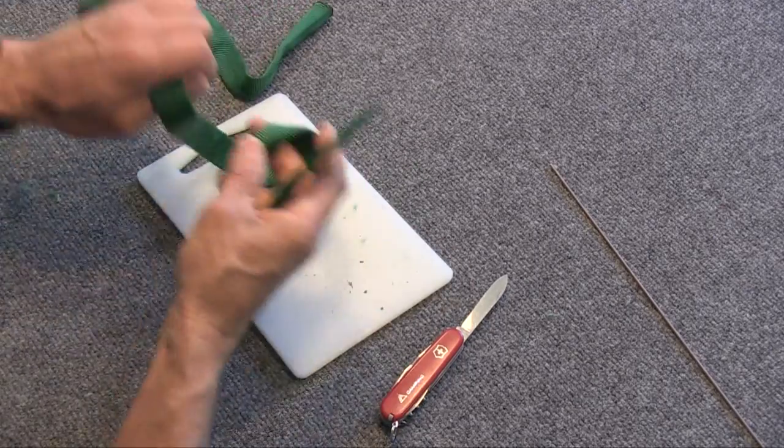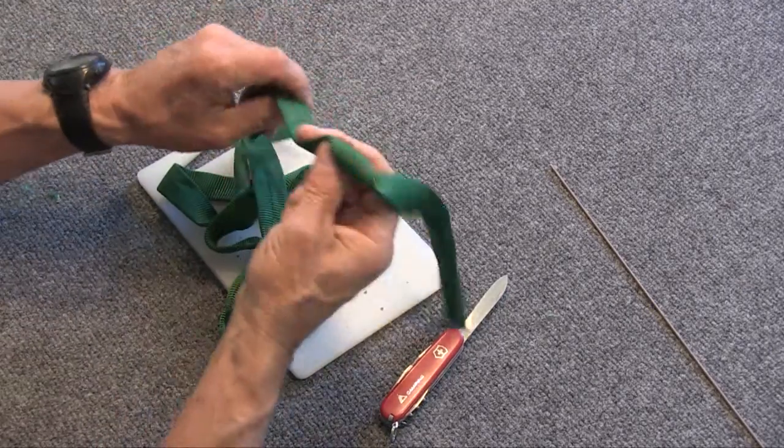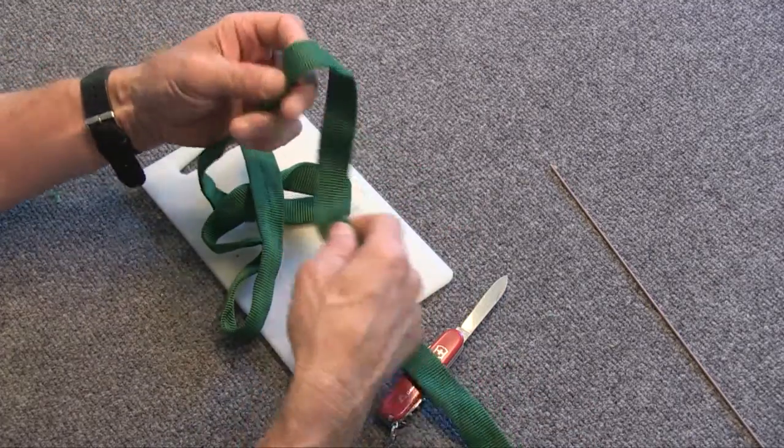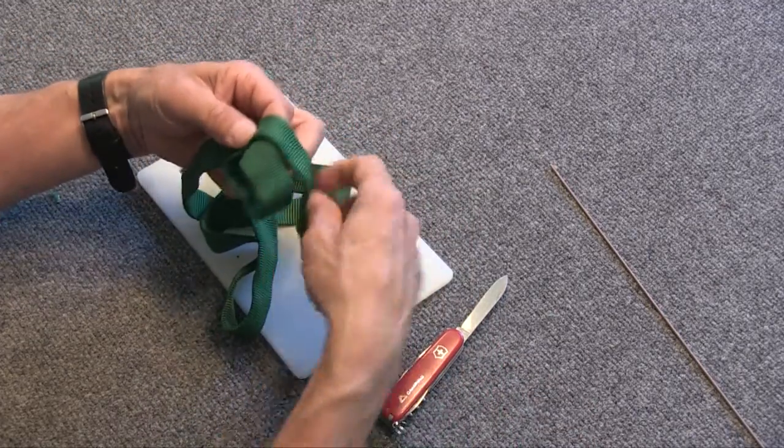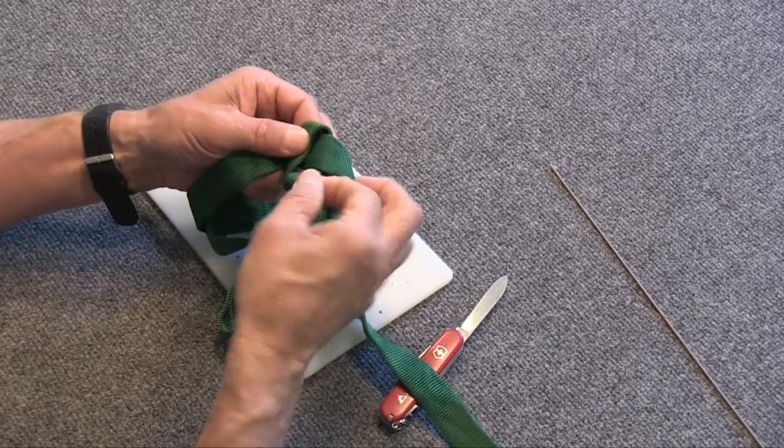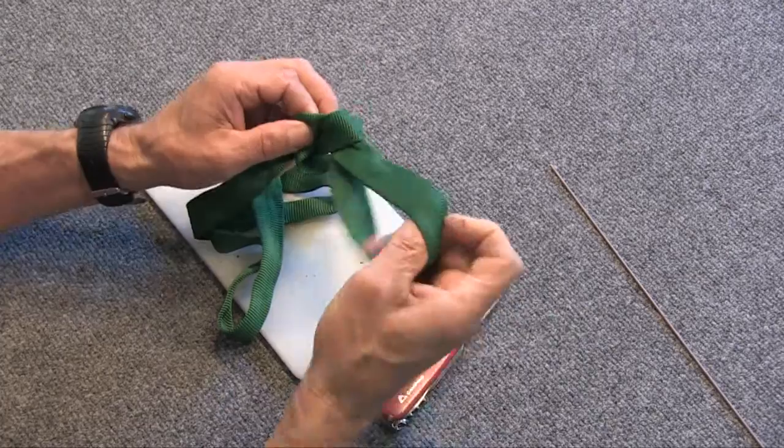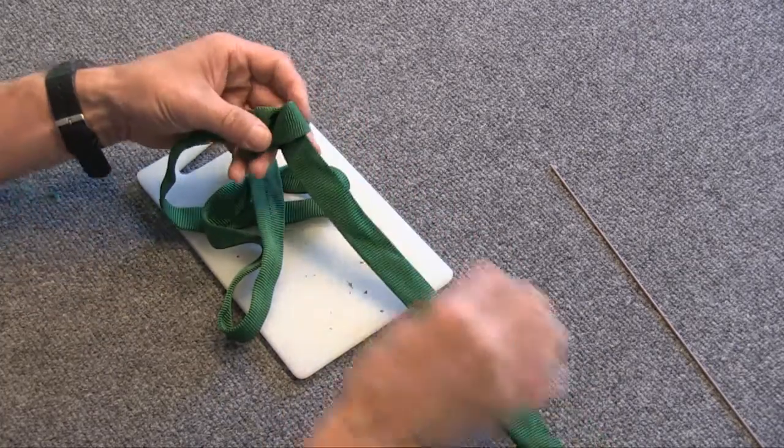The next step is to go back to the other end again and tie an overhand knot about 18 inches back from the end here. You're just going to tie an overhand knot. Just leave it loose, don't pull it tight in the webbing like that.